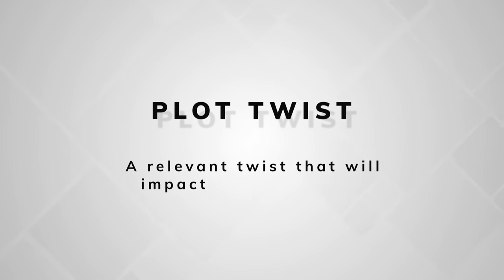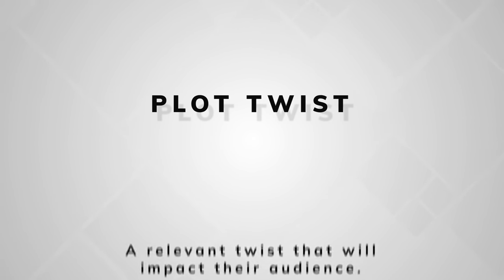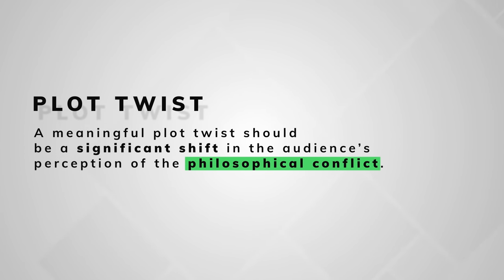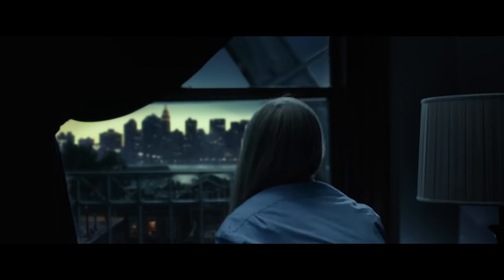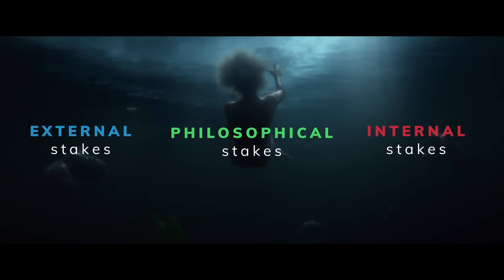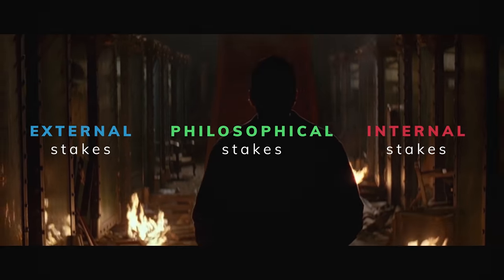I believe there is a very clear and structural method a writer can follow to ensure that they have a relevant twist that will impact their audience. This method stems from one simple definition: a meaningful plot twist should be a significant shift in the audience's perception of the philosophical conflict. Remember how the best stories have three sets of stakes? The external stakes, the internal stakes, and the philosophical stakes. Following this logic, we can see how a twist should be constructed.